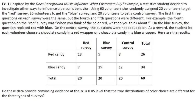So the first example was inspired by the does background music influence what customers buy example. It says a statistics student decided to investigate other ways to influence a person's behavior. Using 60 volunteers, she randomly assigned 20 volunteers to get the red survey, 20 volunteers to get the blue survey, and 20 volunteers to get a control survey. The first three questions on each survey were the same, but the fourth and fifth questions were different. For example, the fourth question on the red survey was, when you think of the color red, what do you think about? On the blue survey, the question replaced red with blue.